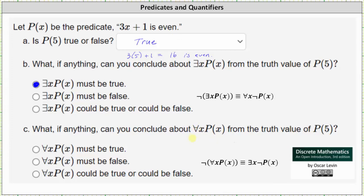Again, this is mainly due to the fact that we don't know the domain of discourse, meaning we don't know the values to consider for x. Which means for every x, P of x, or for every x, 3x plus 1 is even, could be true or could be false.